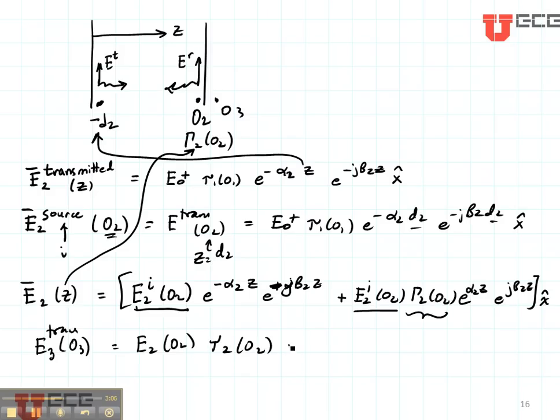Then it's propagating in the positive direction. Positive direction means I need a negative sign: negative J beta 3 Z. And it's going to be polarized in the X direction. So there are our fields.